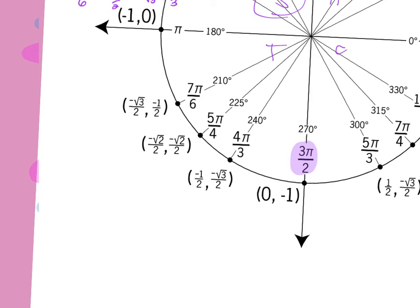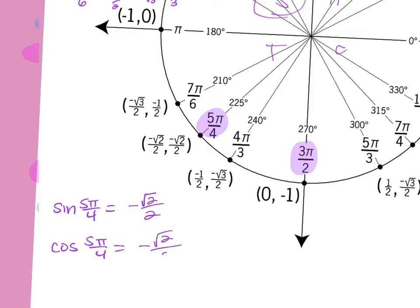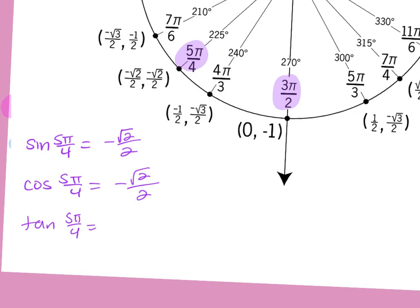Let's pick the over-4 in the third quadrant — 5 pi over 4. If I ask for the sine at 5 pi over 4, it's the y — negative root 2 over 2. Cosine at 5 pi over 4 is negative root 2 over 2. And the tangent: y over x — negative root 2 over 2 over negative root 2 over 2 — is 1.